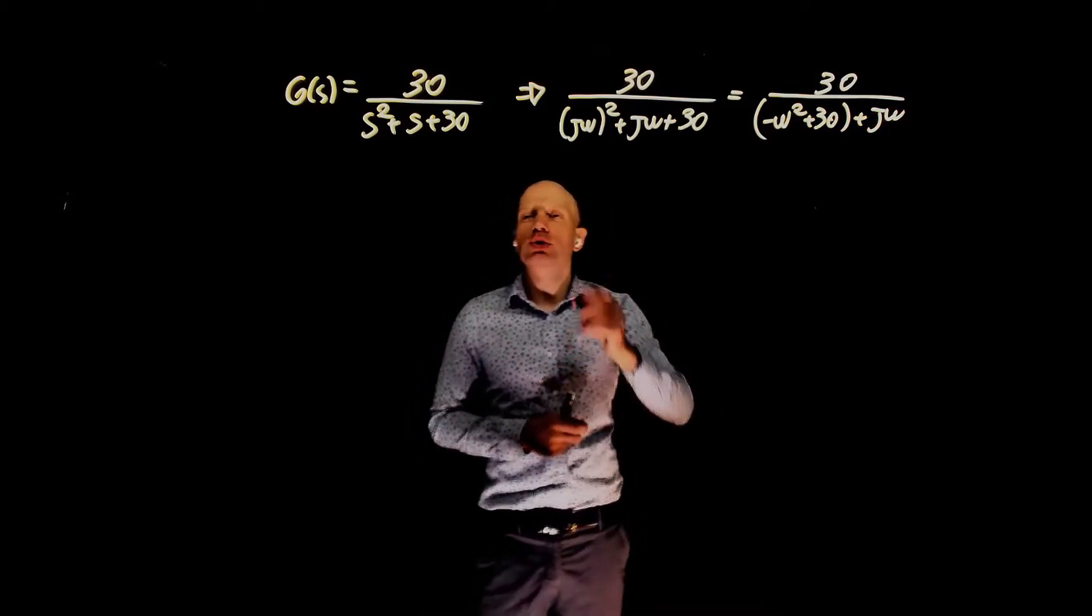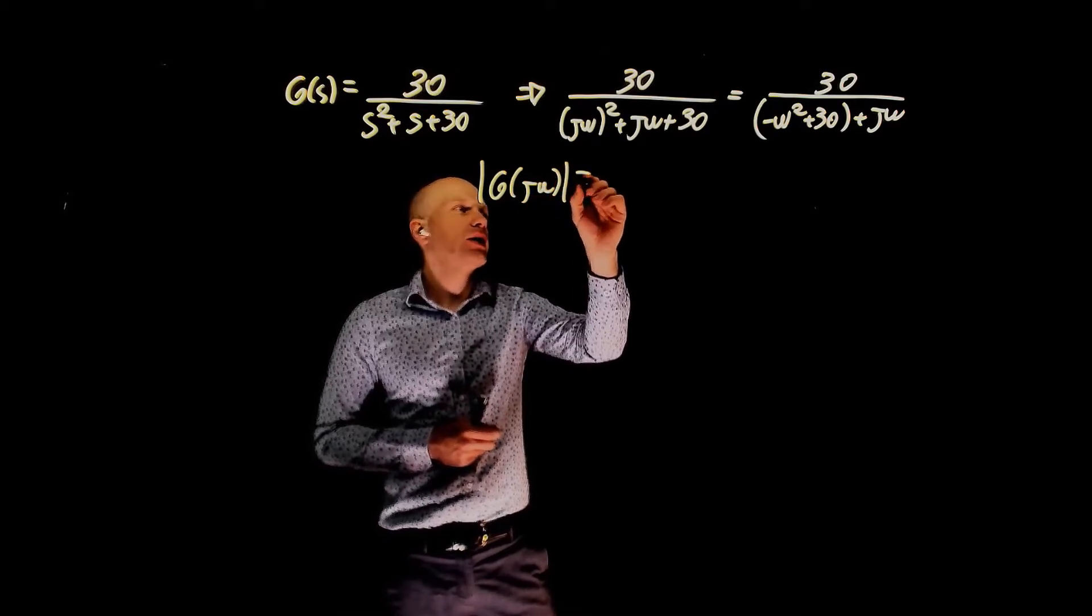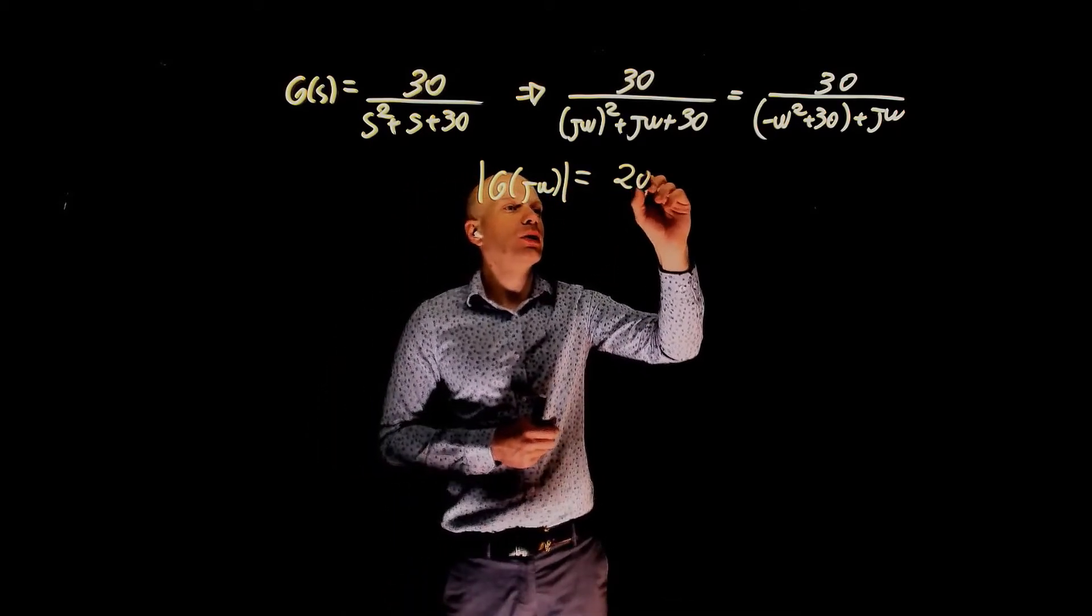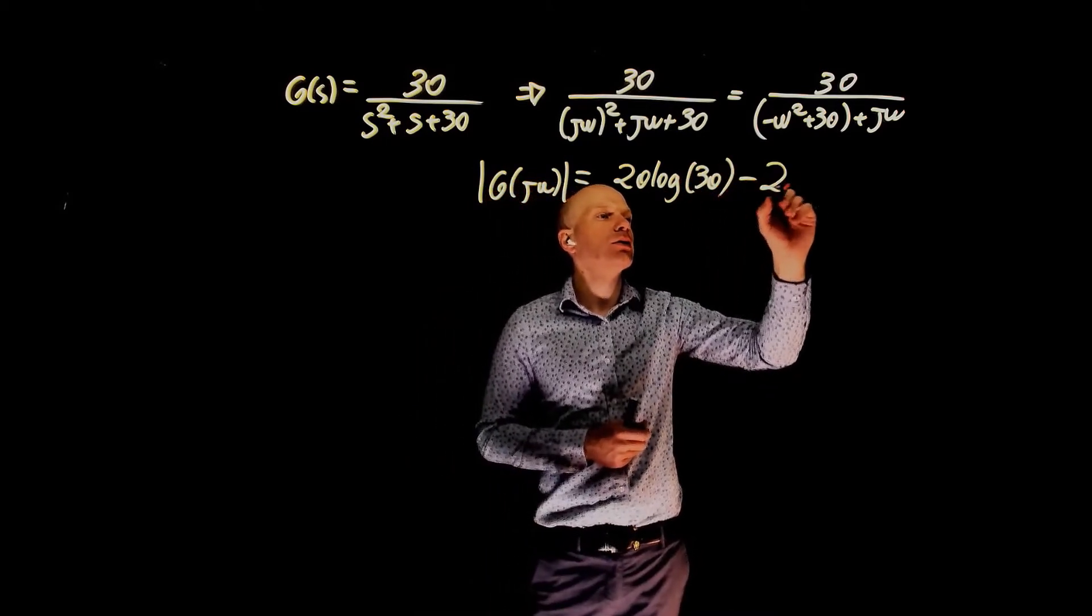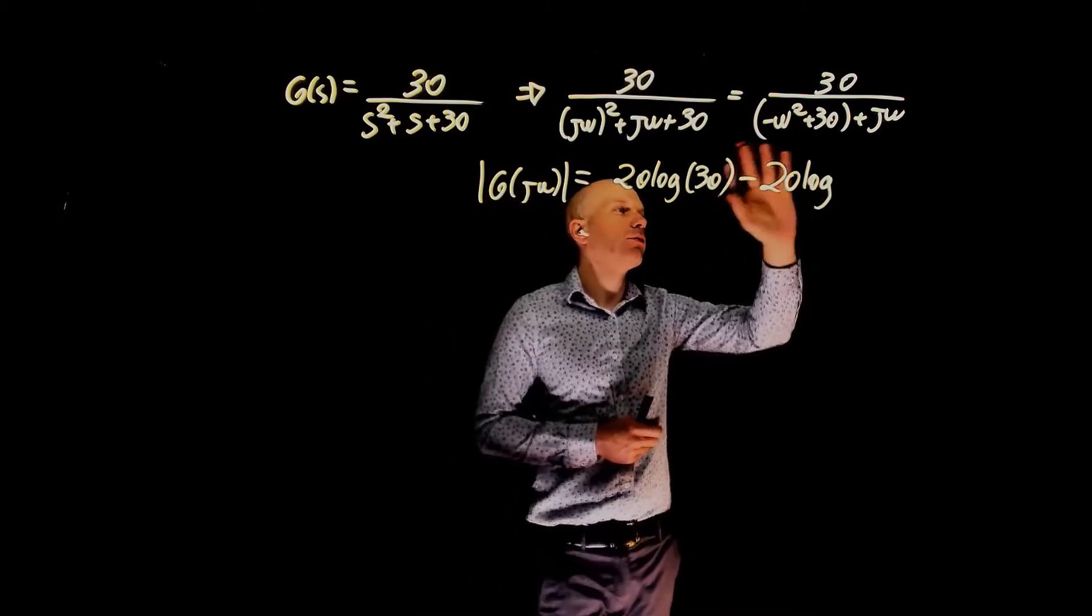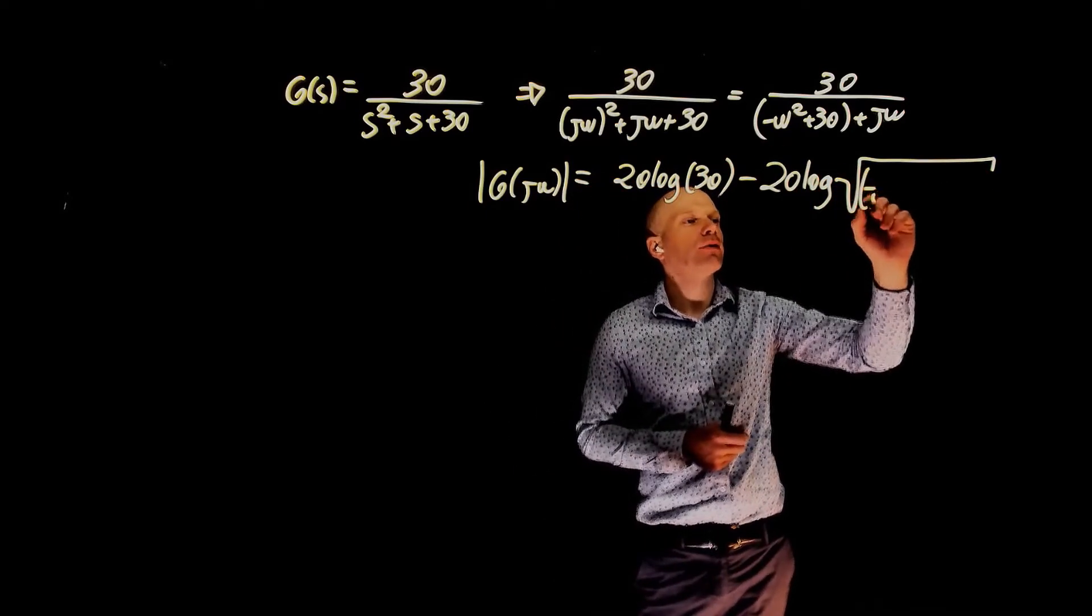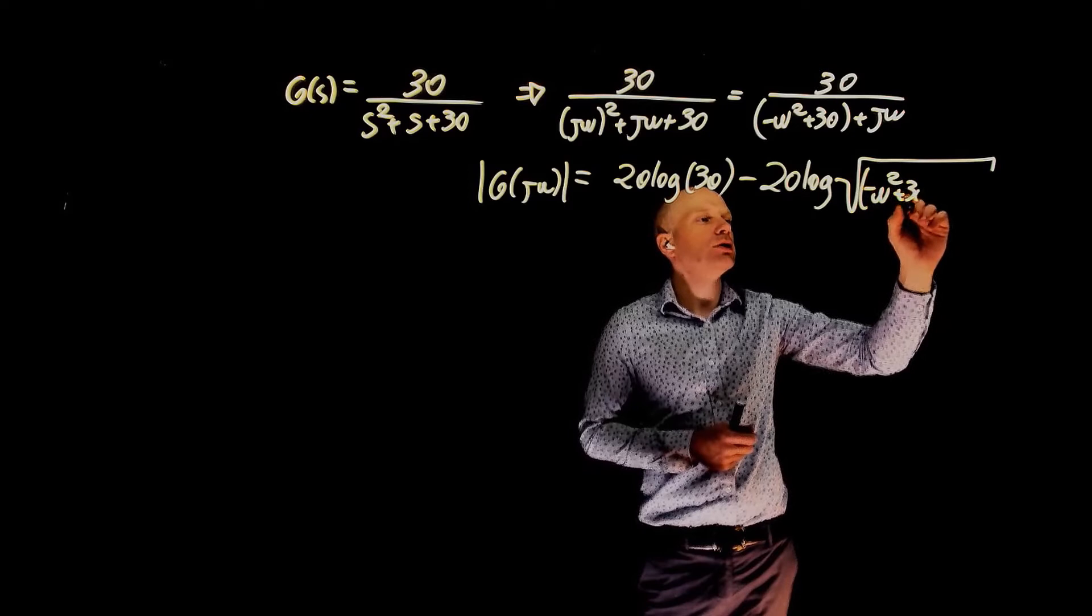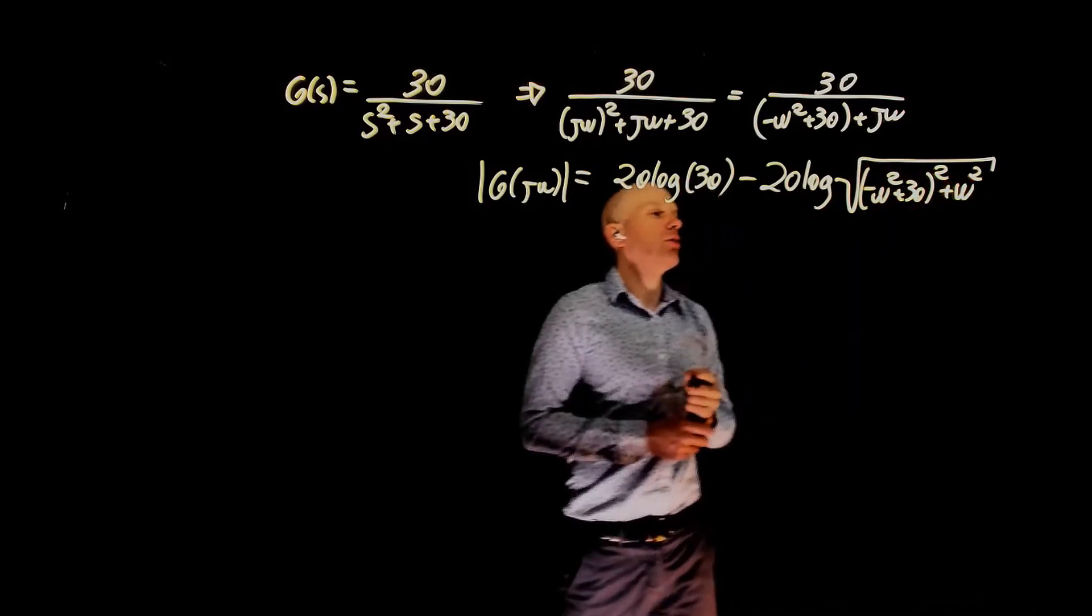What is the magnitude of G(jω)? The magnitude is 20 log of 30 minus 20 log of the square root of the real part squared, negative ω² plus 30, plus imaginary part squared, ω².